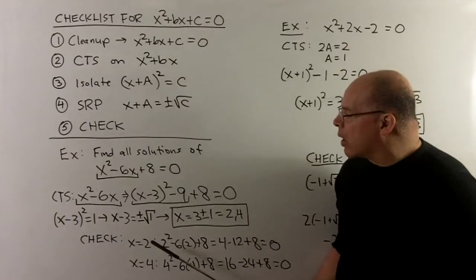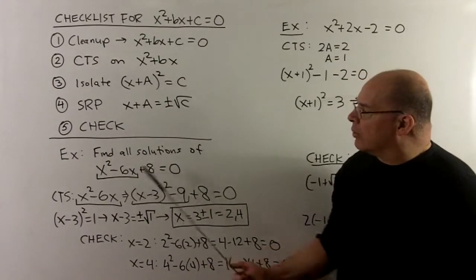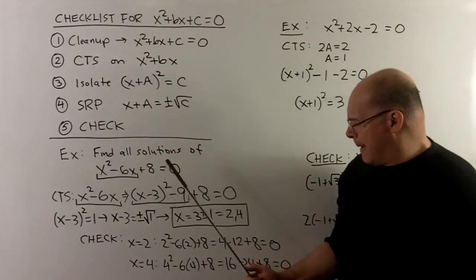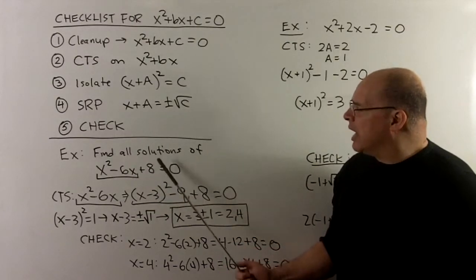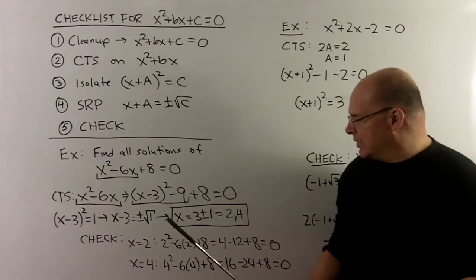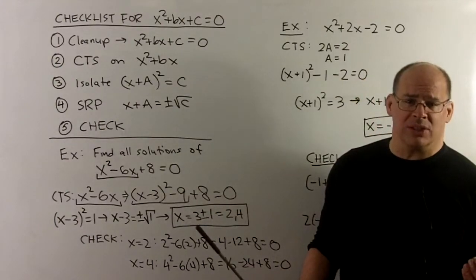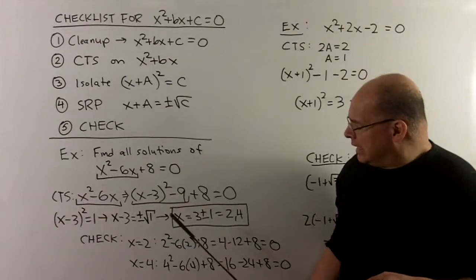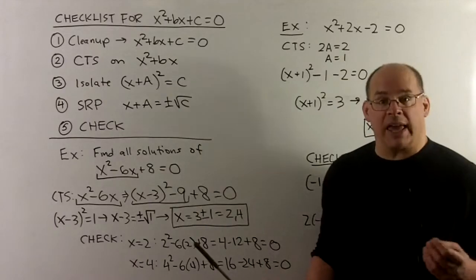Of course, we check our work. Taking x equals 2 in the original equation: 2 squared minus 6 times 2 plus 8 gives 4 minus 12 plus 8, which equals zero. Similarly, putting in x equals 4 also gives zero. Both solutions check out.